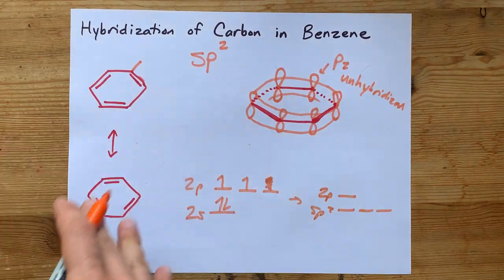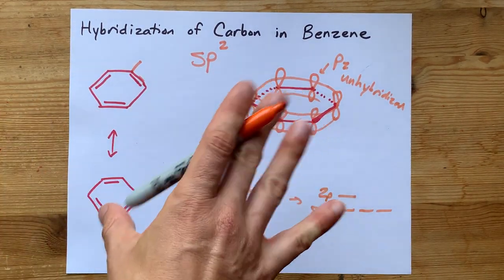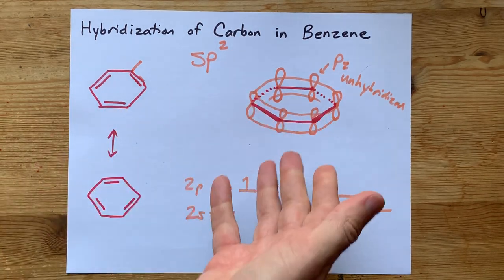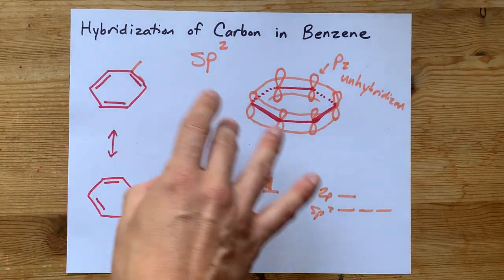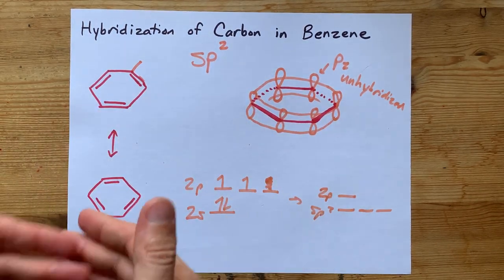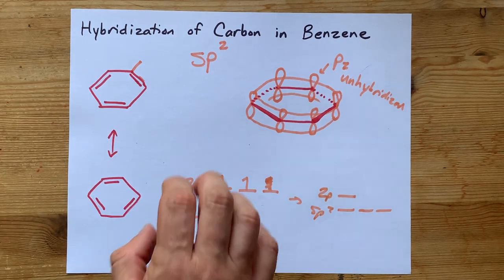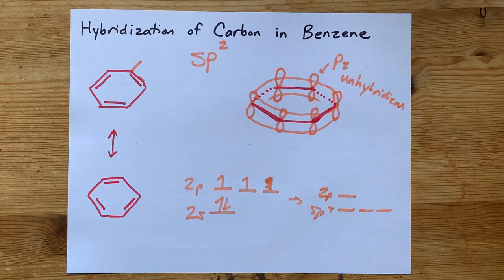The hybridization of carbon in benzene is sp2, and I hope talking through this has explained to you why we know that to be true. Thanks for being with me, and best of luck.